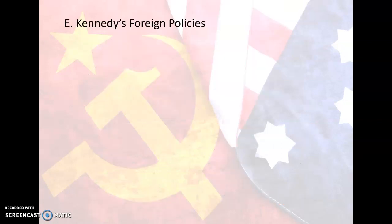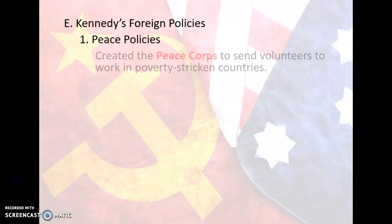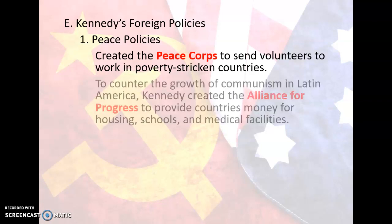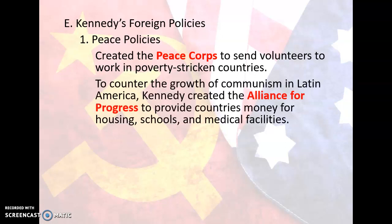Letter E: Kennedy's Foreign Policies. Kennedy entered the presidency with several ideas for helping needy countries and spreading peace. Number one: Peace Policies. He helped create what became known as the Peace Corps to send volunteers to work in poverty-stricken countries. Peace Corps volunteers served for two years and helped to improve schools, medical care, and conservation in more than 60 countries around the world. To counter the growth of communism in Latin America, Kennedy created the Alliance for Progress to provide countries money for housing, schools, and medical facilities — in all, the U.S. provided about $12 billion. JFK hoped that easing poverty would reduce the unrest that allowed communism to spread.